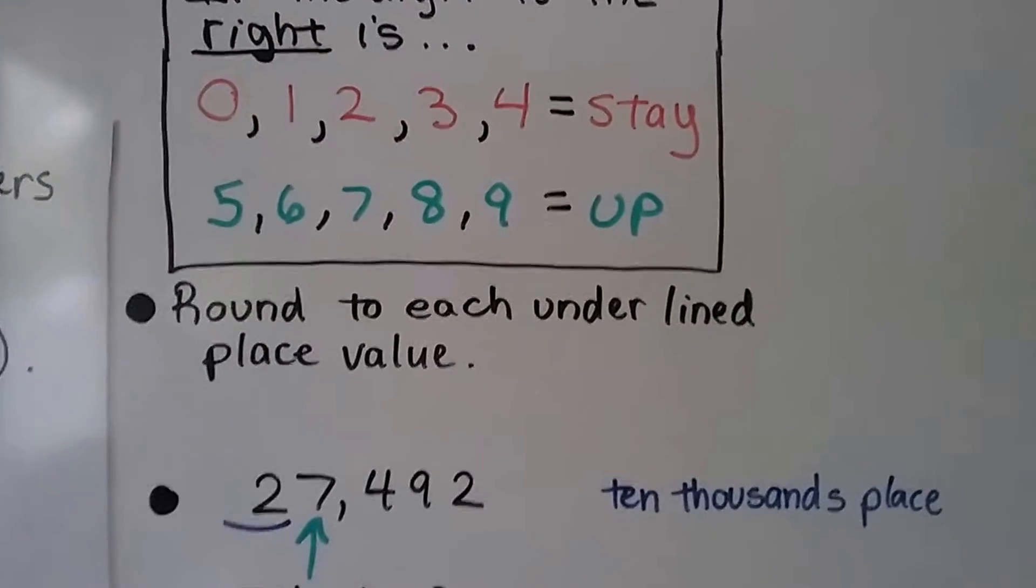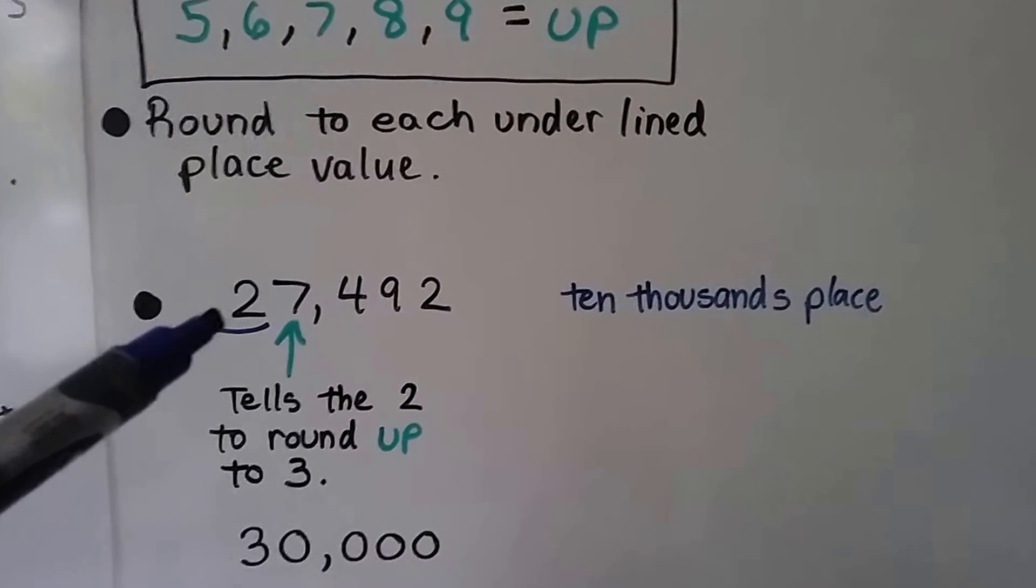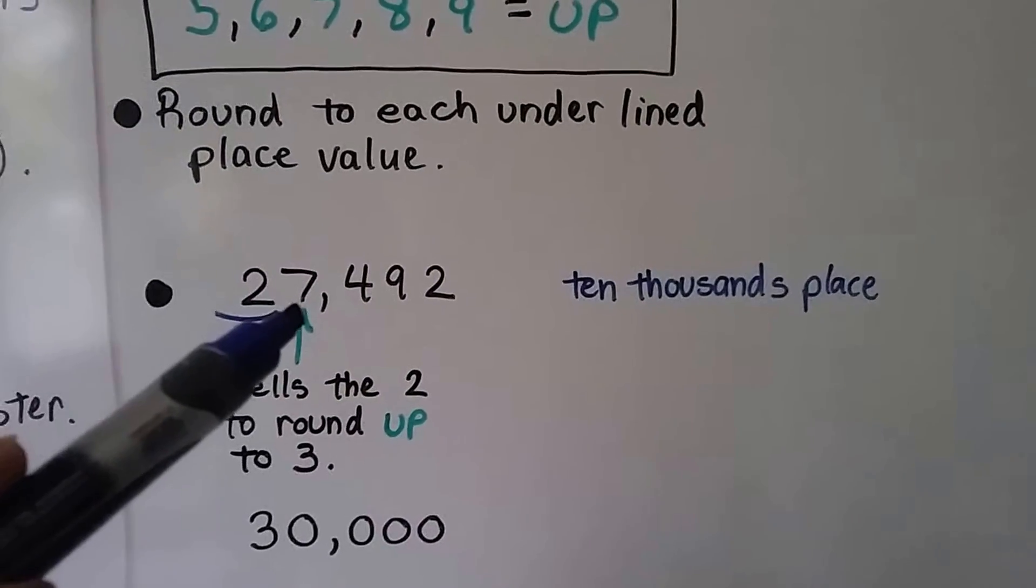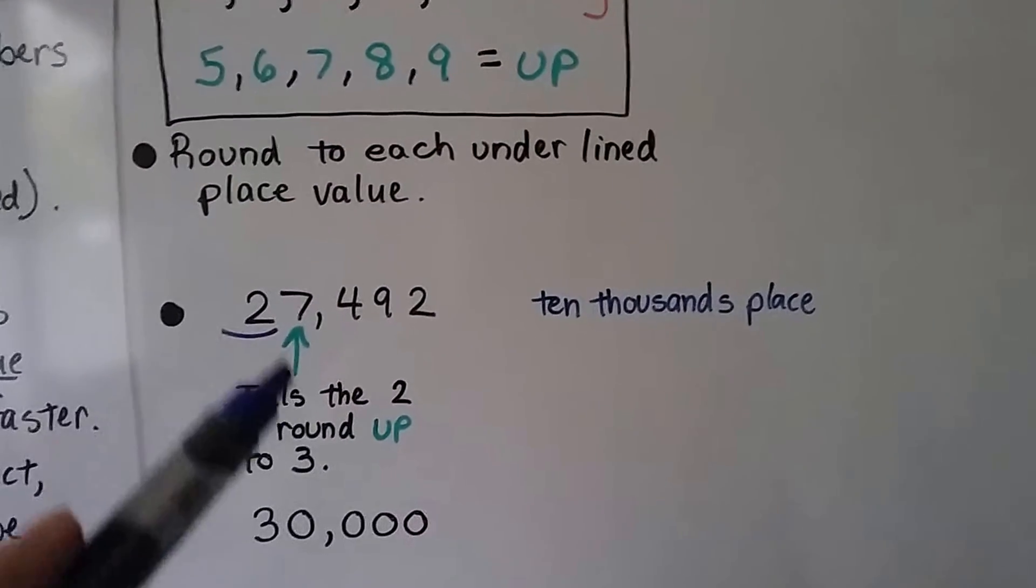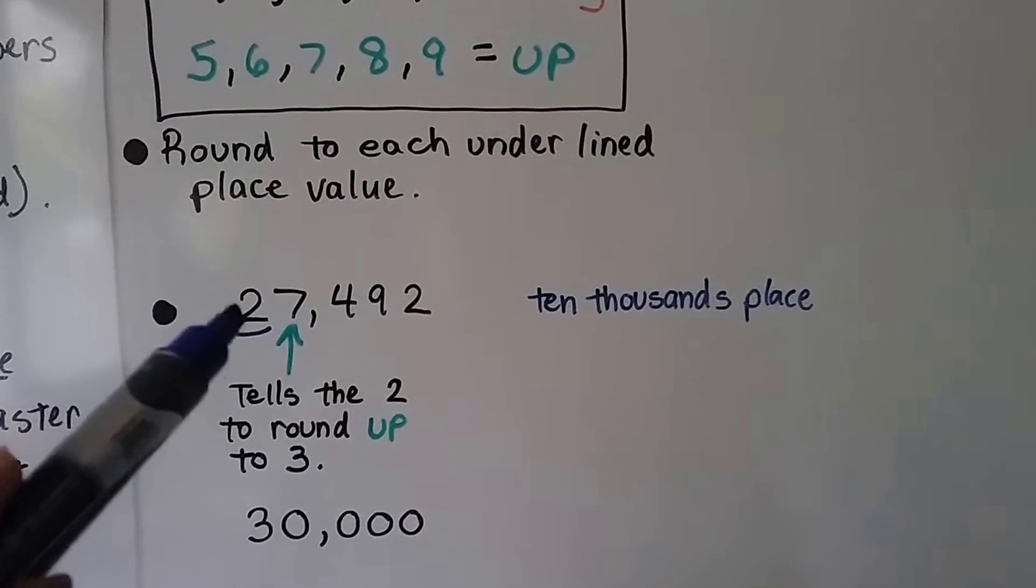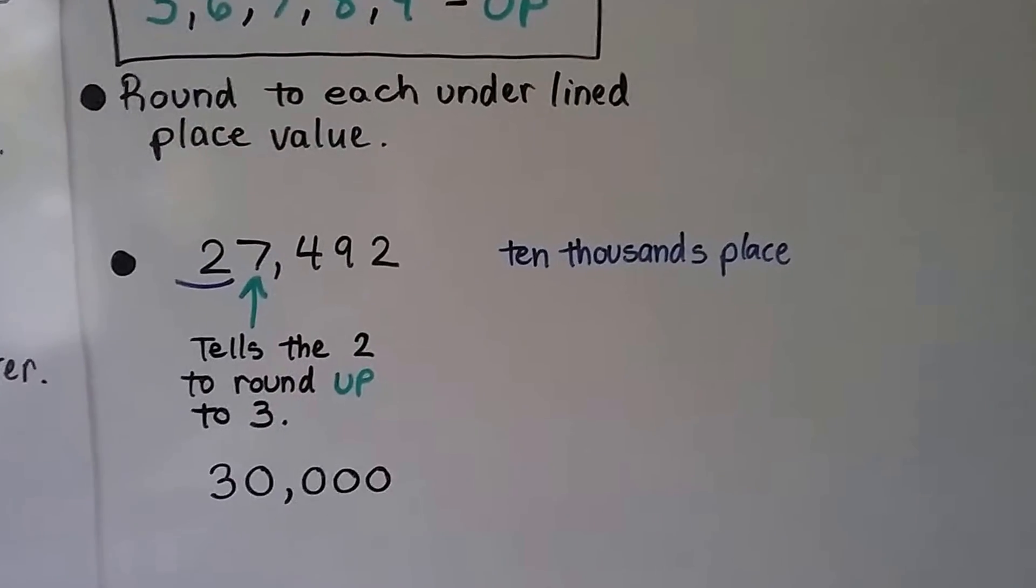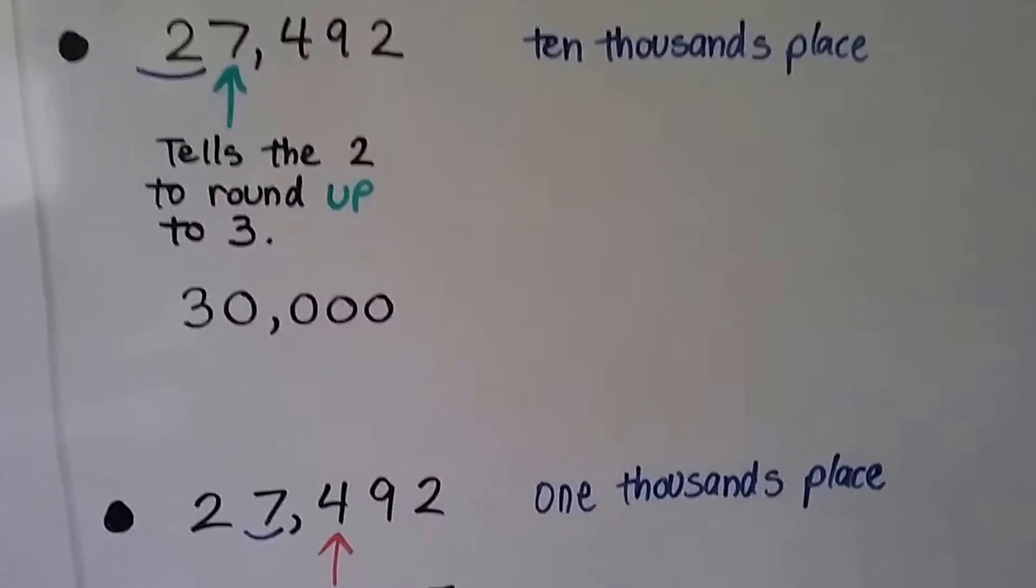So it says round each underlined place value. Here we have this 2 that's underlined. That's the ten thousands place. We look to the digit to the right, and it's a 7. 7 says go up. It tells the 2 to round up to a 3. So 27,492 rounds to 30,000 to the ten thousands place.